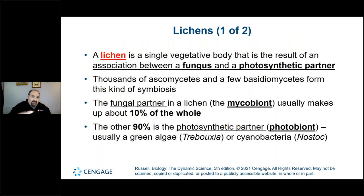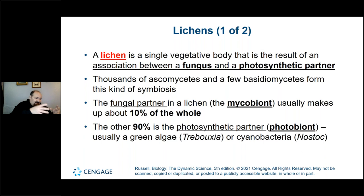A lichen is a combination of a fungus and a photosynthetic partner — it's a mutualistic relationship. Lichen isn't just one organism; it's a combination of a fungus and a plant coming together. Thousands of ascomycetes and a few basidiomycetes form this kind of symbiotic relationship.